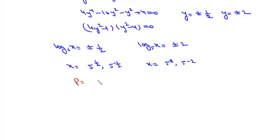Now if we take the product of these four values, it will be 5 to the power 1 by 2 into 5 to the power minus 1 by 2, times 5 square into 5 to the power minus 2, which will be 5 to the power 0, which is 1. So the answer to this question is simply 1.